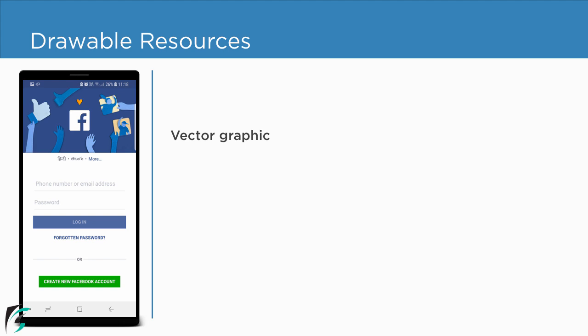Vector graphics are basically scalable vector graphics. These graphics automatically scale up and down based on the device screen densities. However, this type of graphic works well only for simple images.